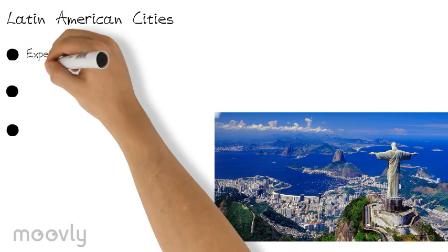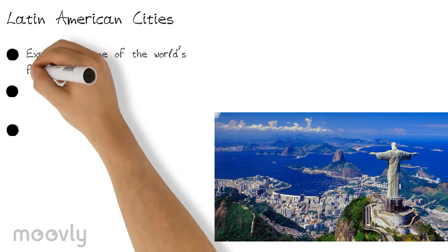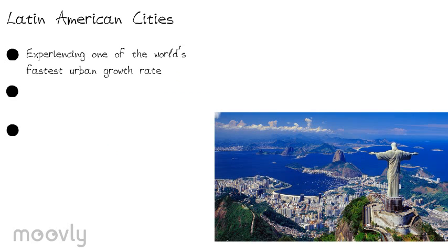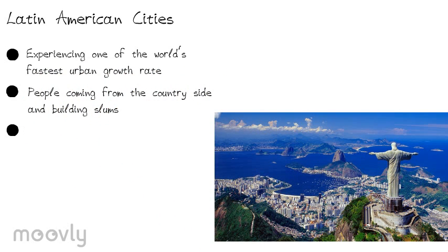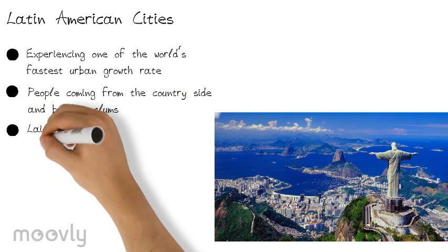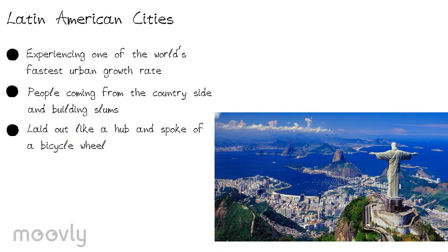Latin American cities are experiencing one of the world's fastest urban growth rates, but still prefer to integrate their native past into their architecture. They are growing so fast due to so many people coming in from the countryside and building slums to live in the city. The cities are laid out like a hub and spoke of a bicycle wheel, with the CBD in the center, the high residential area extending outwards, the middle class residential filling up a small space, and the slums on the edge of the cities.